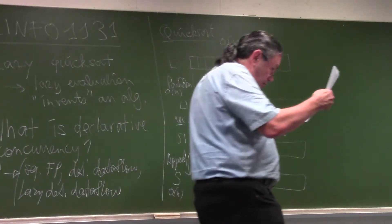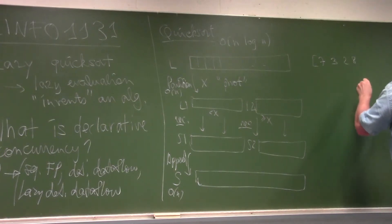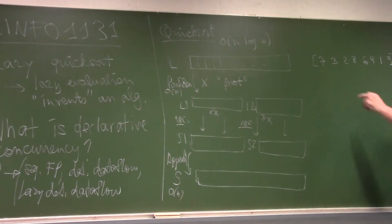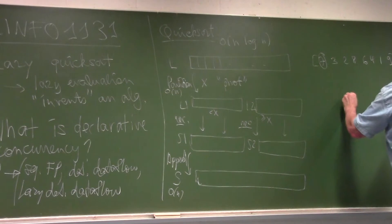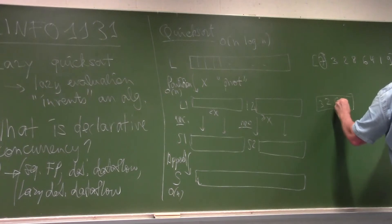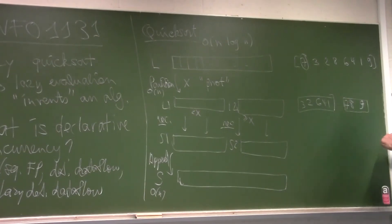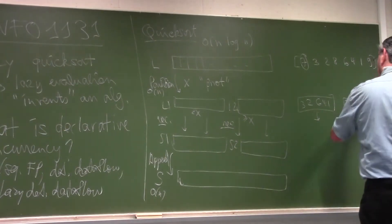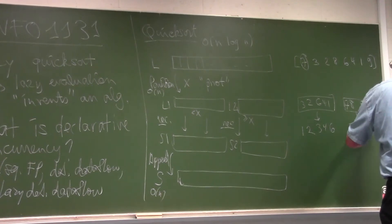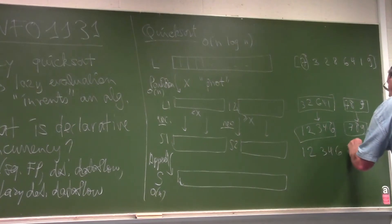For example, with the list 7, 3, 2, 8, 6, 4, 1, 9 — taking 7 as the pivot — we get elements less than 7: {3, 2, 6, 4, 1}, and elements greater or equal: {7, 8, 9}. Then we sort those two lists recursively to get {1, 2, 3, 4, 6} and {7, 8, 9}, and append them to get {1, 2, 3, 4, 6, 7, 8, 9}.